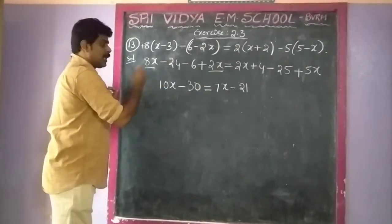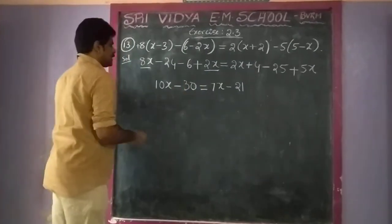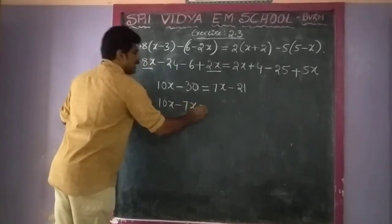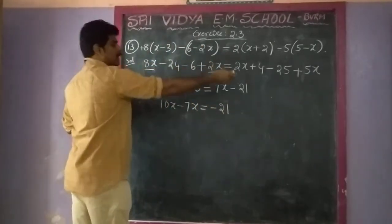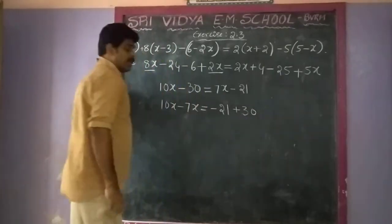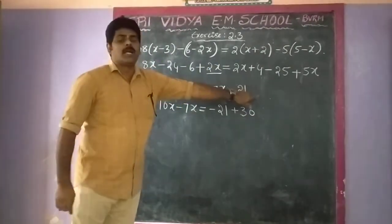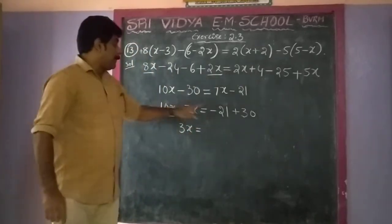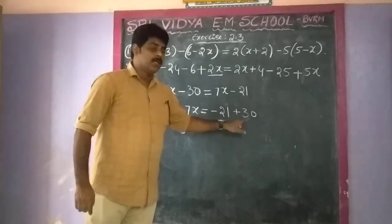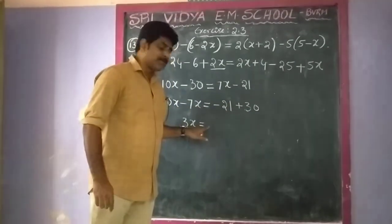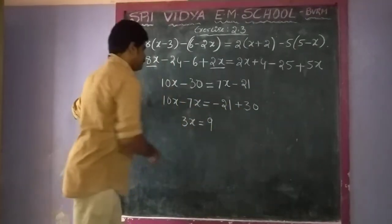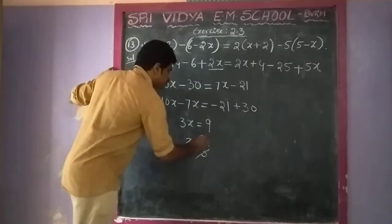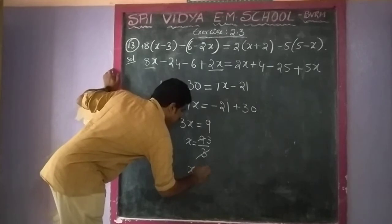Then transpose: variable terms together and constant terms together. Transpose 7x to the left: 10x minus 7x equals 3x. Transpose minus 21 to the right: minus 21 plus 30. So 3x equals 30 minus 21 which is 9. Therefore x is equal to 9 by 3, so x is equal to 3.